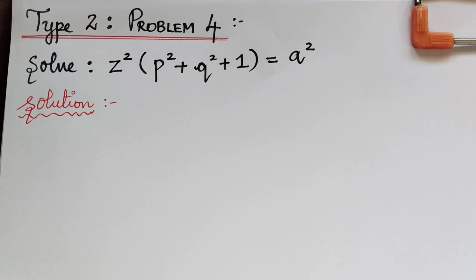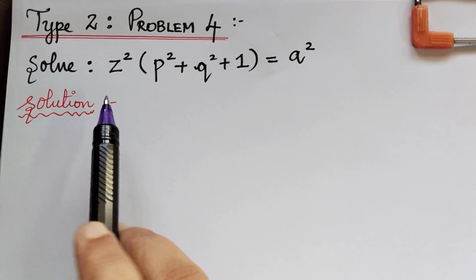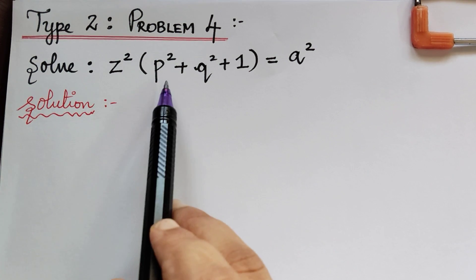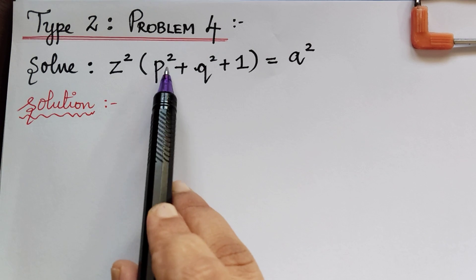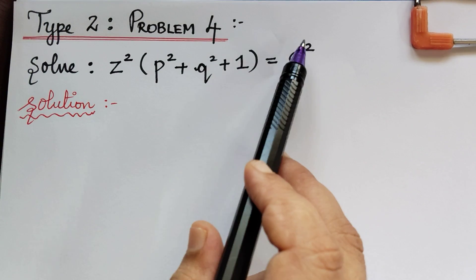Hello students. Under the topic non-linear partial differential equations, we are solving problems under Type 2. So standard type 2 — here we have problem 4. Already we have completed problems 1, 2, and 3. Problem 4 is: solve z squared multiplied with p squared plus q squared plus 1 is equal to a squared.